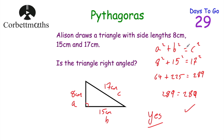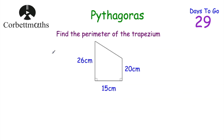Pythagoras's theorem is useful to find longer or shorter sides of right-angled triangles, and to show whether triangles are right-angled. But sometimes Pythagoras's theorem appears in other questions that don't obviously look like right-angled triangles. Here's a question: find the perimeter of the trapezium. Things to look out for: it could be an isosceles triangle you chop vertically, a rectangle you cut diagonally, or here — a trapezium. Perimeter means adding up all the distances around the outside: 26 cm, 15 cm, 20 cm, and we need to find the length of the diagonal.